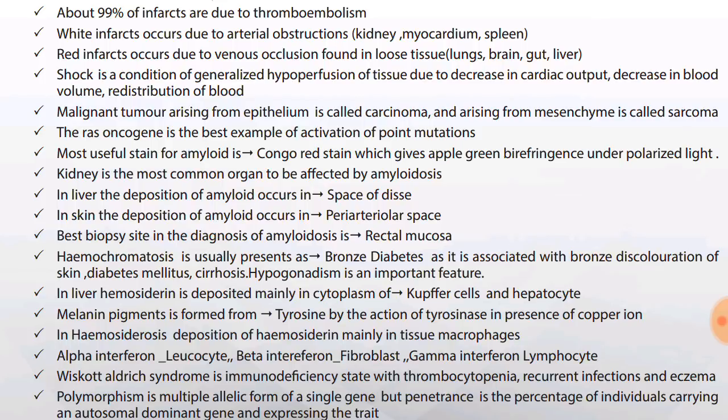Alpha-interferon is from leukocytes, beta-interferon from fibroblasts, and gamma-interferon from lymphocytes. Just remember these associations: alpha in leukocytes, beta in fibroblasts, gamma in lymphocytes.